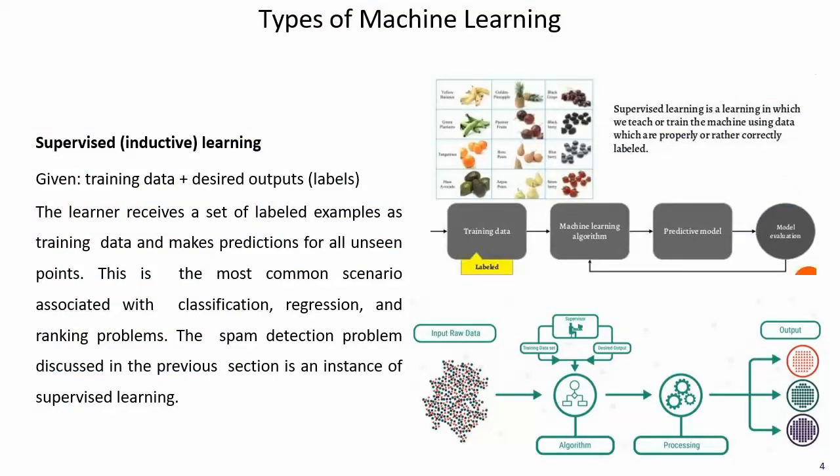Mainly in this lecture, I am going to focus on only supervised and unsupervised and a small part of semi-supervised learning. We already discussed that in supervised learning we are providing labels. The labeled data will be given to the machine, the machine learns using the labeled data, predicts some answers based on that, and the model will be evaluated. This type of learning we call supervised learning.